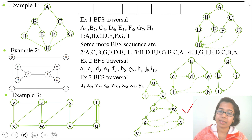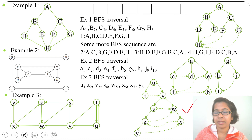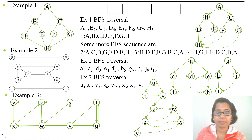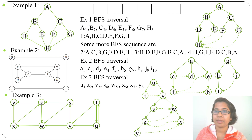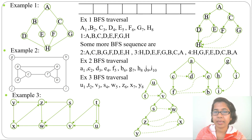In today's lecture I discussed three examples — two undirected graphs and one directed graph — for BFS traversal and construction of the BFS tree. In the next lecture I will discuss BFS applications and the difference between DFS and BFS. If this lecture was helpful, please like and subscribe. Thank you.